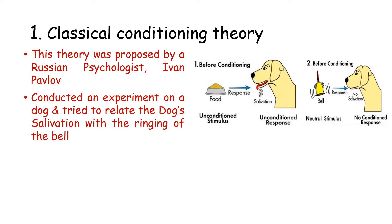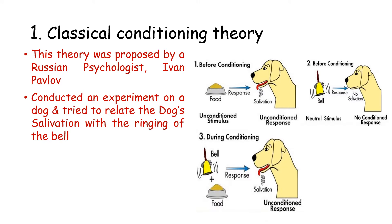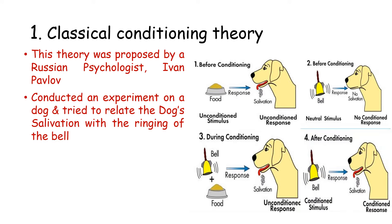In the second phase of the experiment, Pavlov did not give him any food but simply rang a bell, and noticed there was no salivation. In the third phase, Pavlov paired the ringing of the bell with the food — he first rang the bell and then offered food, repeating this several times, and noticed salivation in the dog. In the final phase, Pavlov observed that the dog would salivate merely at the sound of the bell even if no food was offered. The dog had actually learned to salivate to the sound of the bell, as it was conditioned to link the bell with food.